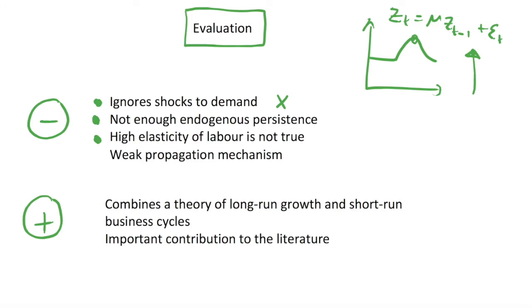Another one that we touched on before was that in order to get our procyclical labor supply as is true in the data, we require a very high elasticity of labor. This is something that has been very highly documented in economics. We're pretty confident that this assumption is not true, and so to get good results with respect to the labor market we require an assumption that isn't true. But again, this is a very simple model, so this is to be expected.